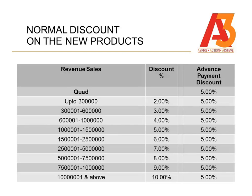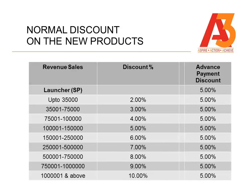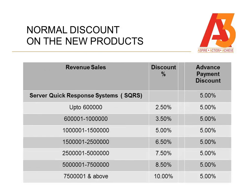This is for Quad — the advance payment discount on 100% advance payment is 5% for all products so far. This is for the Launcher, where it still remains at 5% flat. And finally for the SQRS, where again it remains at 5%. I am sure you have found this incentive scheme to be very lucrative.